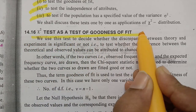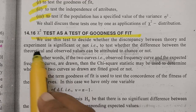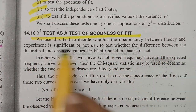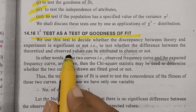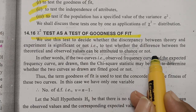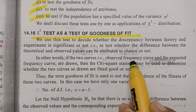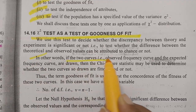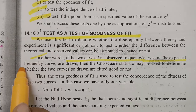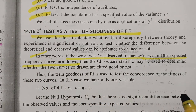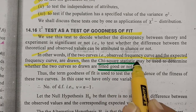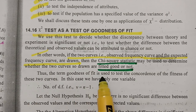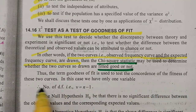Chi-square test as the test of goodness of fit: we use this test to decide whether the discrepancy between the theory and the experiment is significant or not — that is, to test whether the difference between the theoretical and the observed values can be attributed to chance or not. In other words, if the observed frequency curve and the expected frequency curve are drawn, the chi-square statistic may be used to determine whether the two curves are fitted well or not.